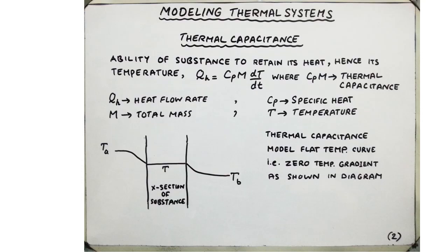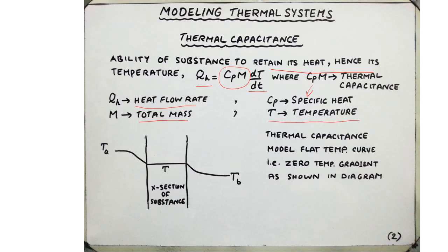Thermal capacitance is the ability of a substance to retain its heat and maintain its temperature. It defines the relationship between the heat flow rate and the rate of change of temperature, and equals CP times M, where CP is the specific heat and M is the total mass. The best way to visualize thermal capacitance is a flat temperature curve across the cross-section of the substance, meaning the substance holds onto its temperature very well with no internal temperature drop.